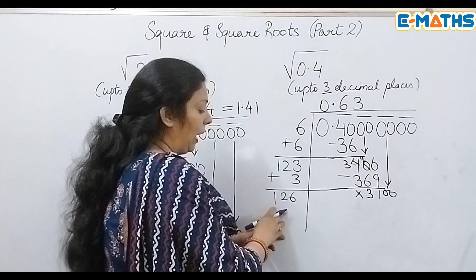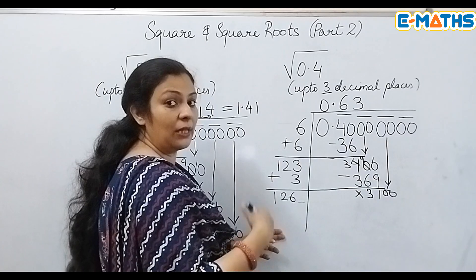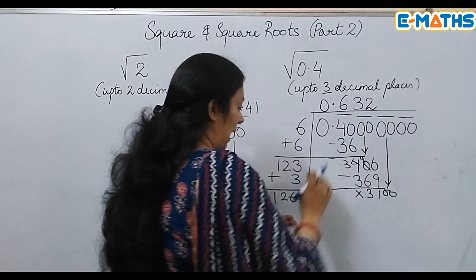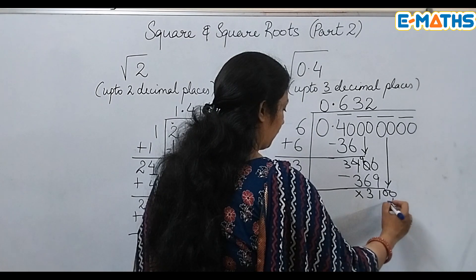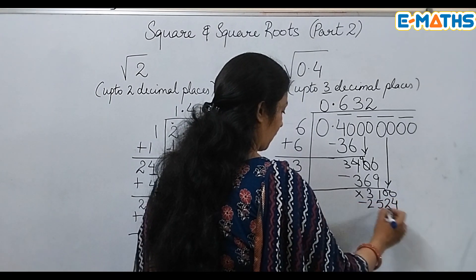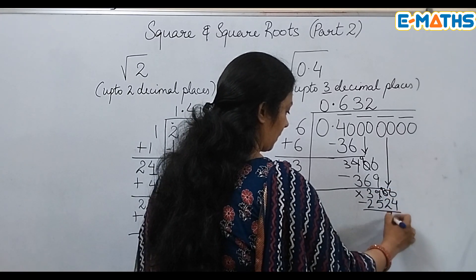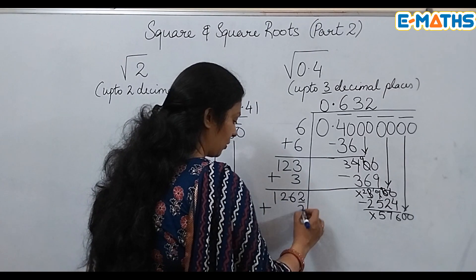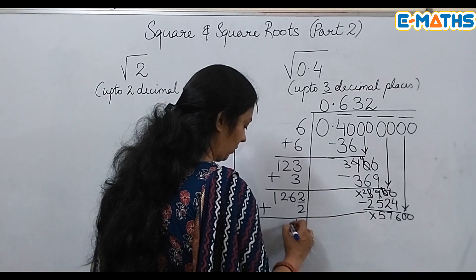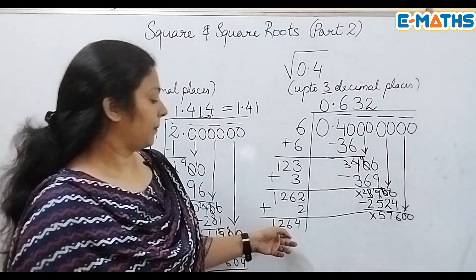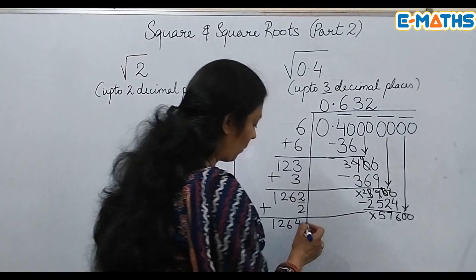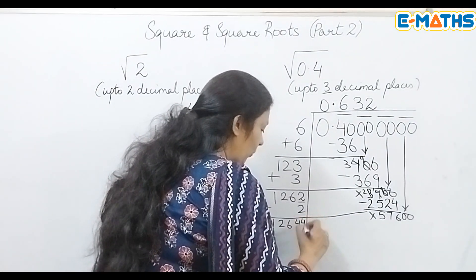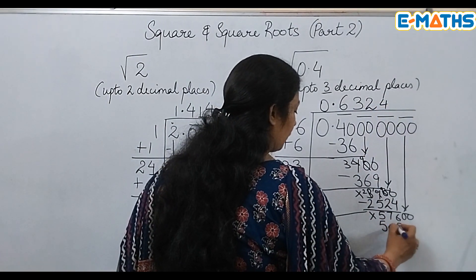Bring down the next pair — this becomes 3100. Add the 3 on the left to get 126. I need to find the next ones-place digit. Taking 1 would be too small; I'll take 2, so 1262×2 = 2524. Bring down the last pair giving 57600. Add 2 to get 1264. Since 1264×4 = 5057.6 — I'll take 4: 12644×4 = 50576.